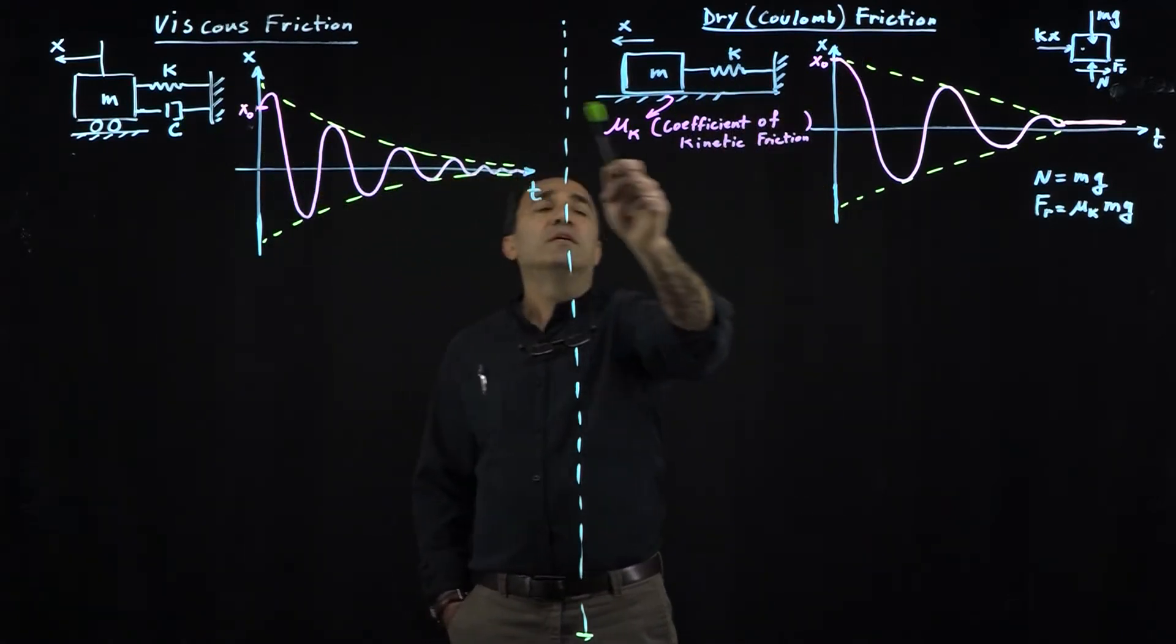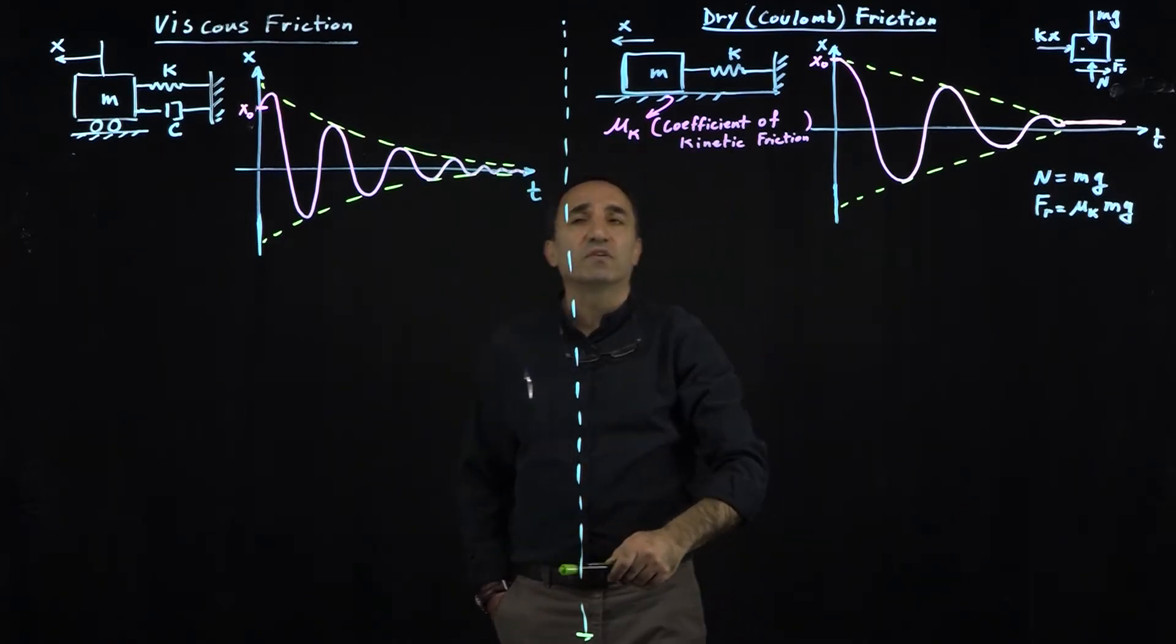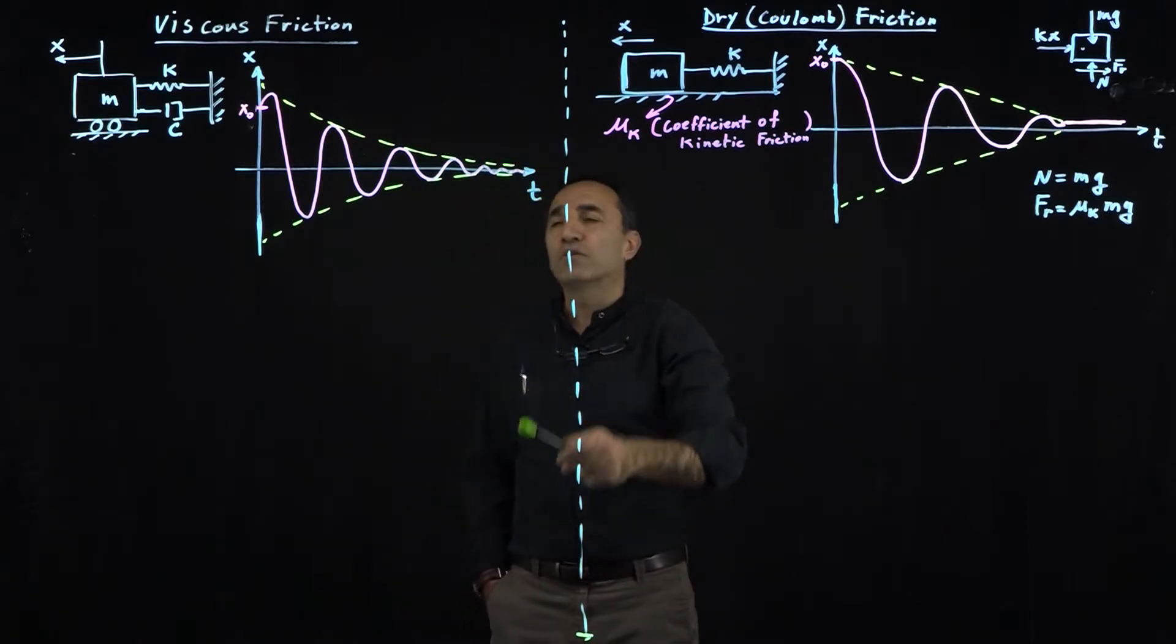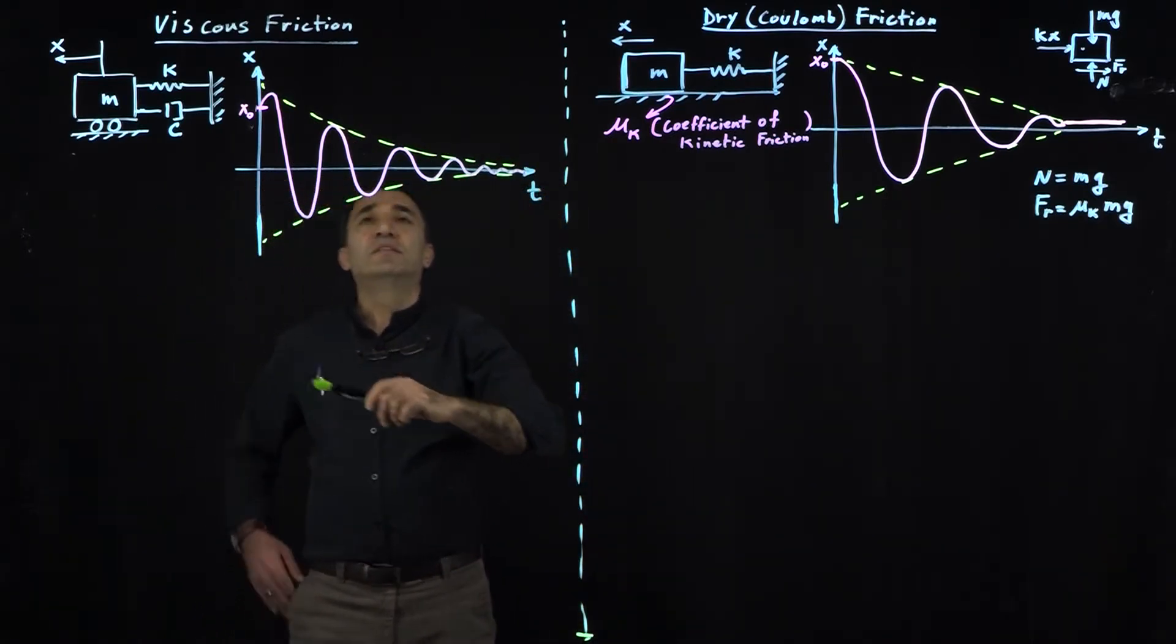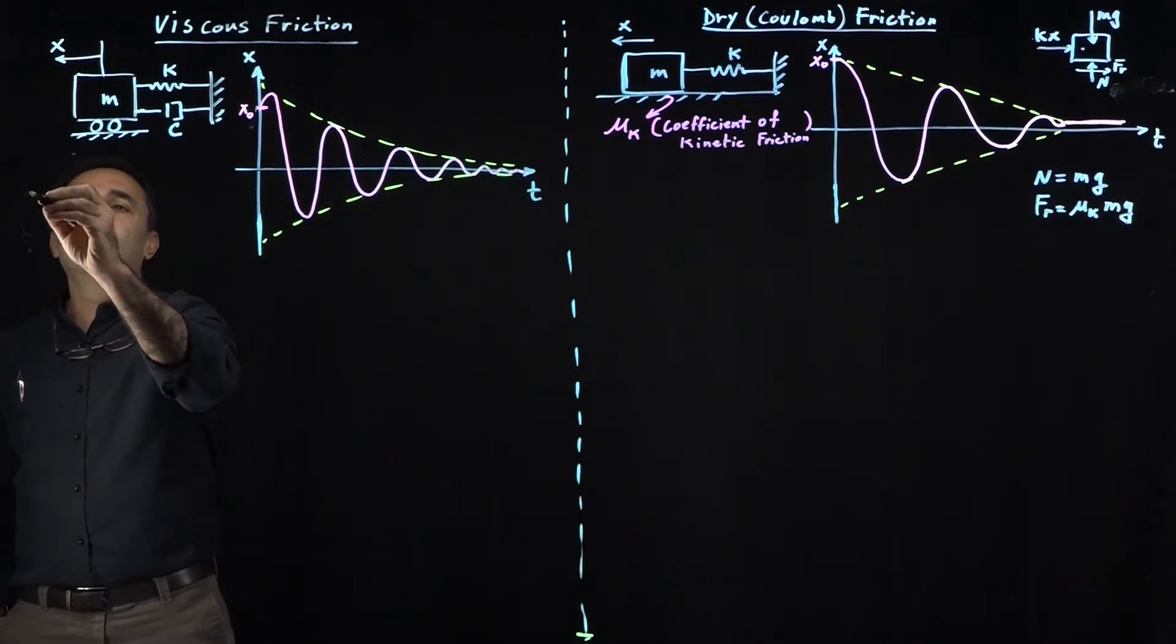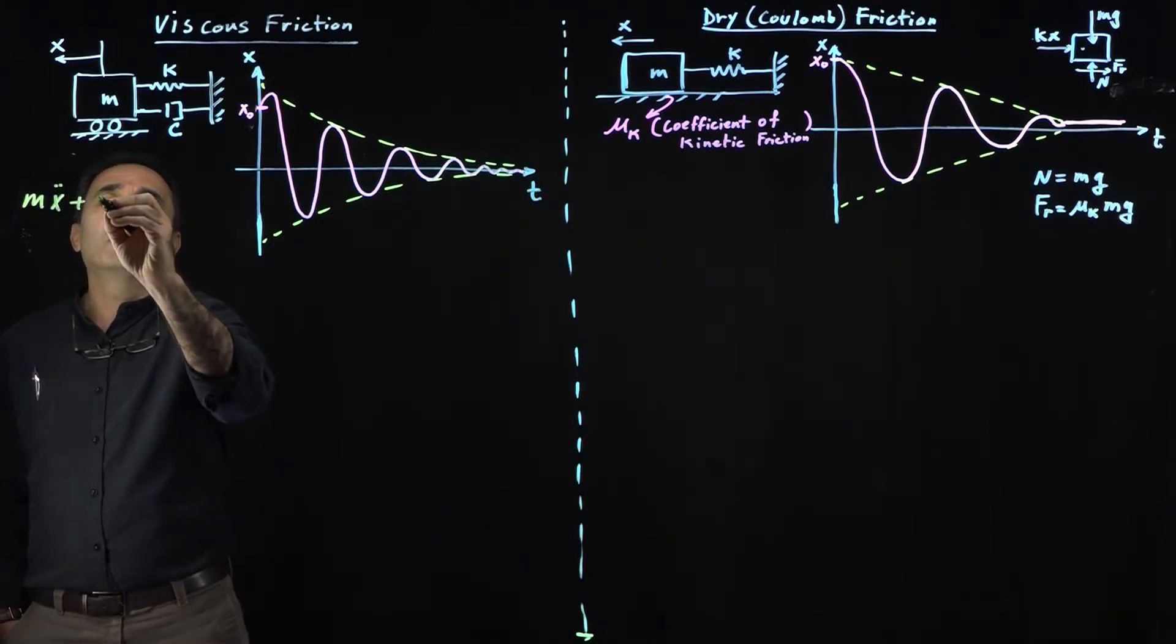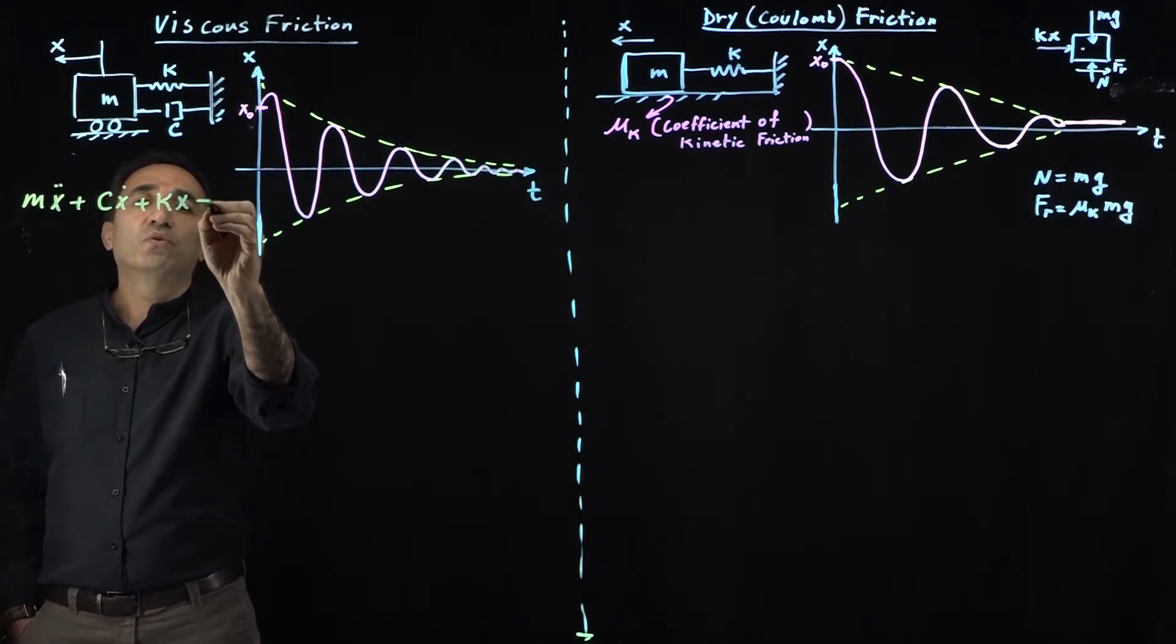The viscous damping is replaced by dry friction, and this mu_k is the coefficient of kinetic friction. I've shown you here how these systems respond. Let me start with the differential equation of this system. The typical differential equation would be MẌ plus CẊ plus KX equals zero.